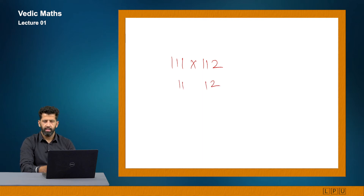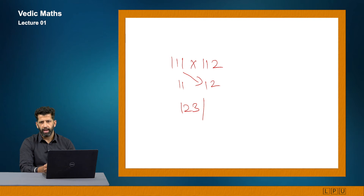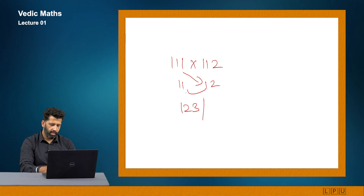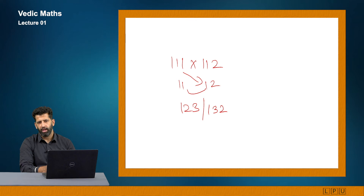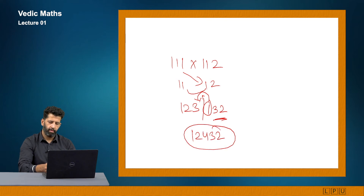For 111 × 112: difference here is 11, difference here is 12. Add the difference of the second number to the first: 111 plus 12 gives 123. On the right-hand side, multiply both differences: 11 into 12 gives 132. But I can only have 2 digits on the right, so the third digit — 1 — is added to the left side. This gives my answer as 12432.